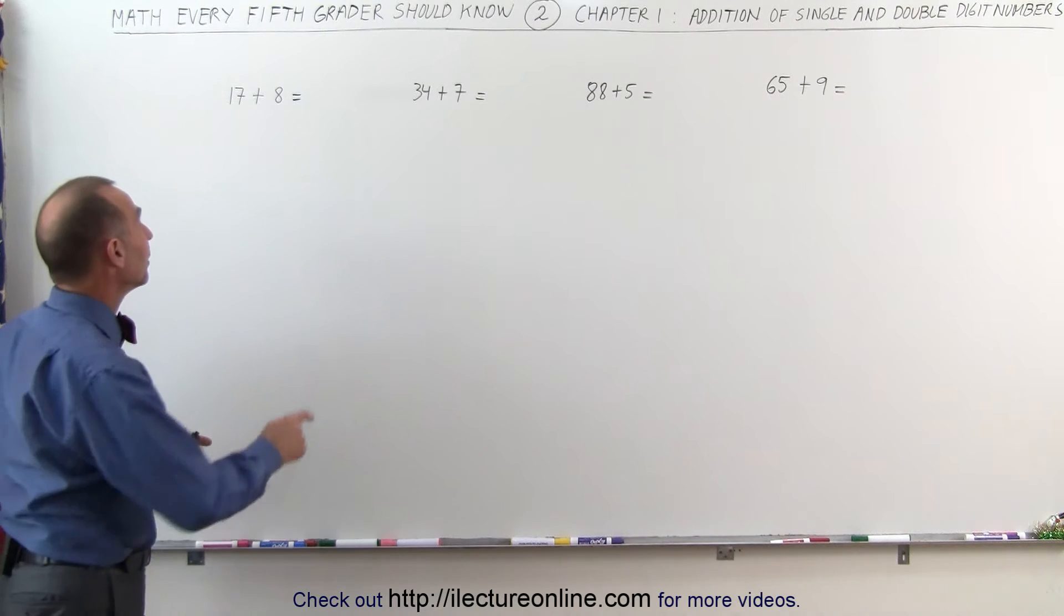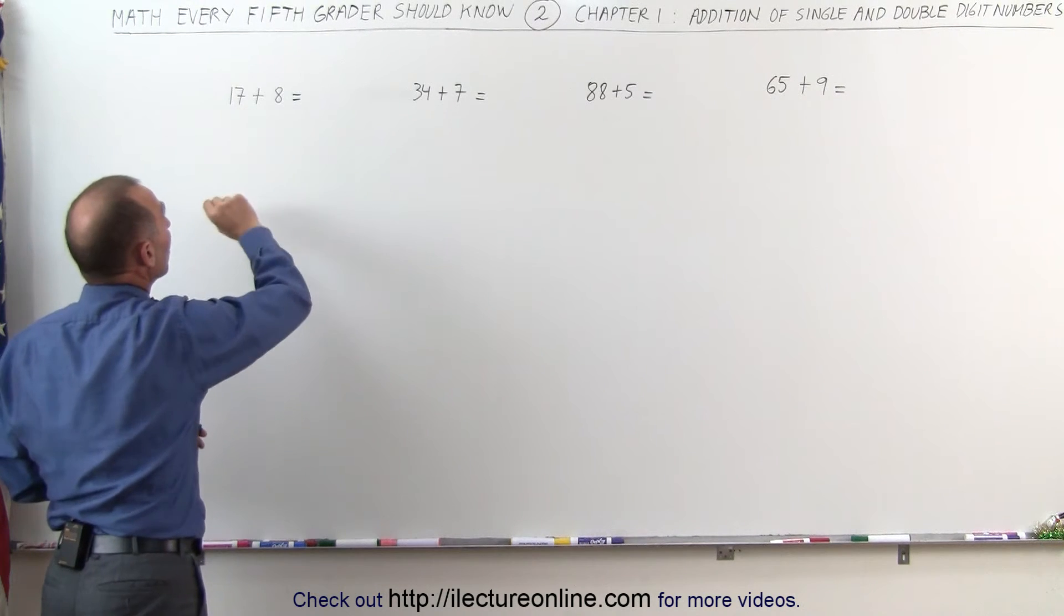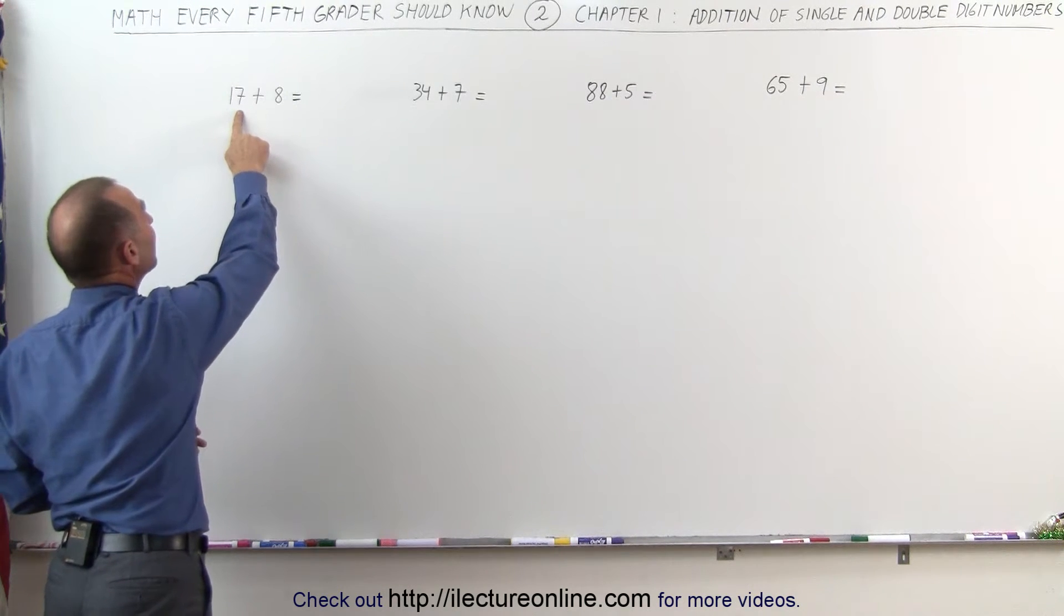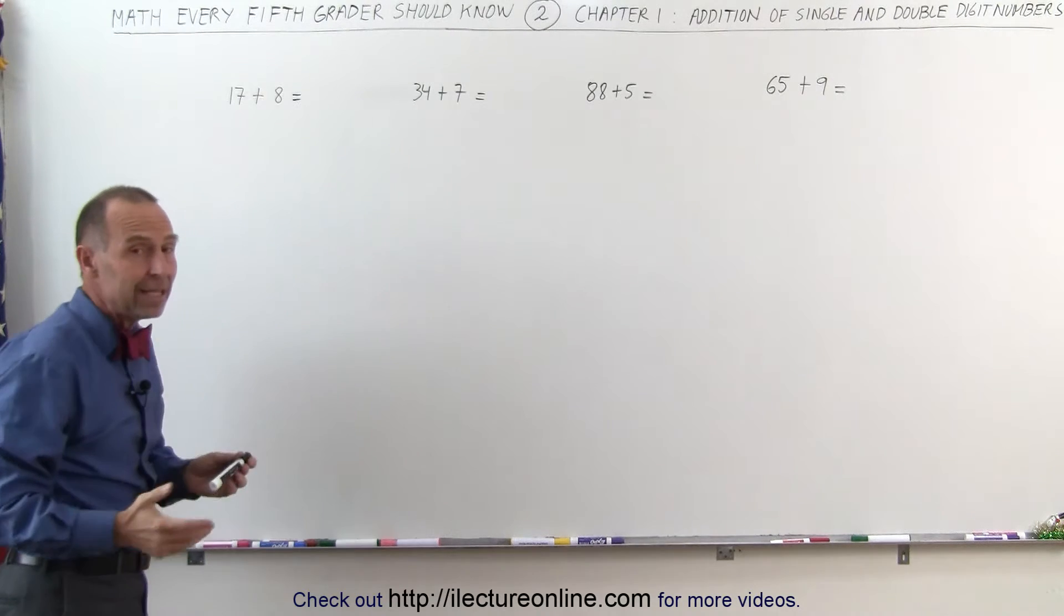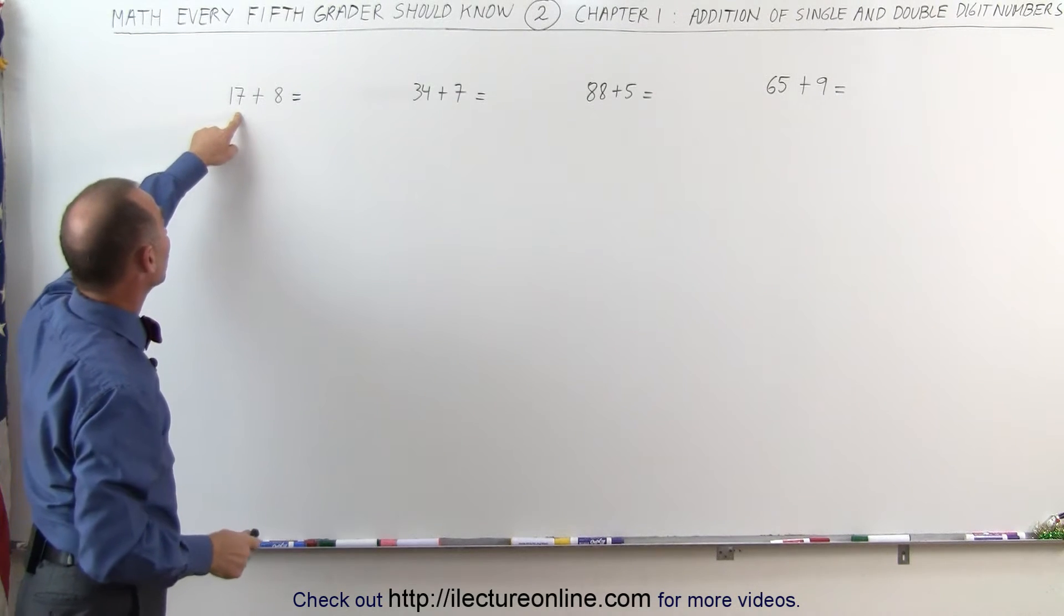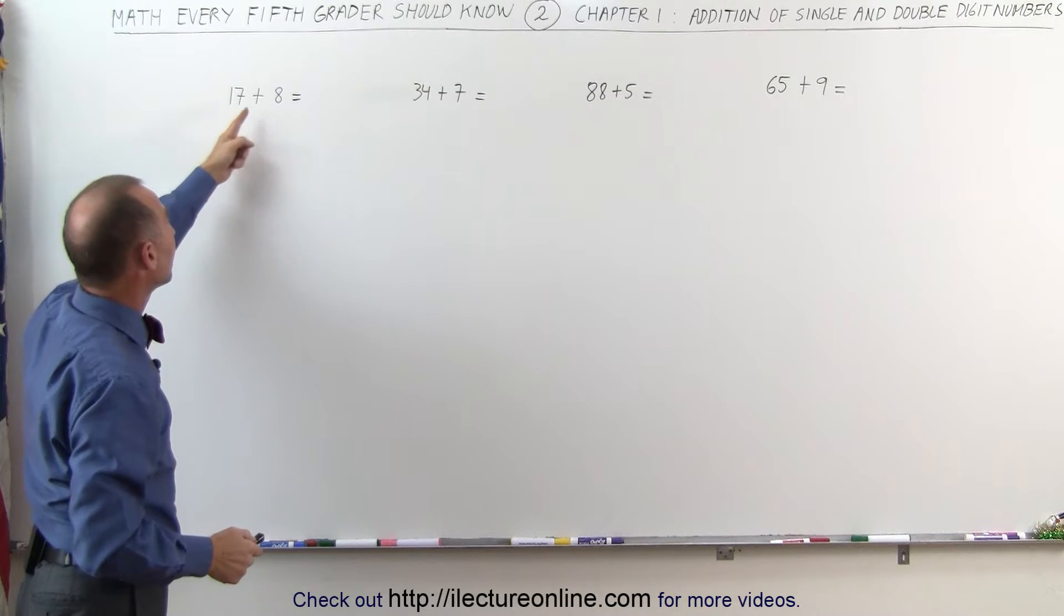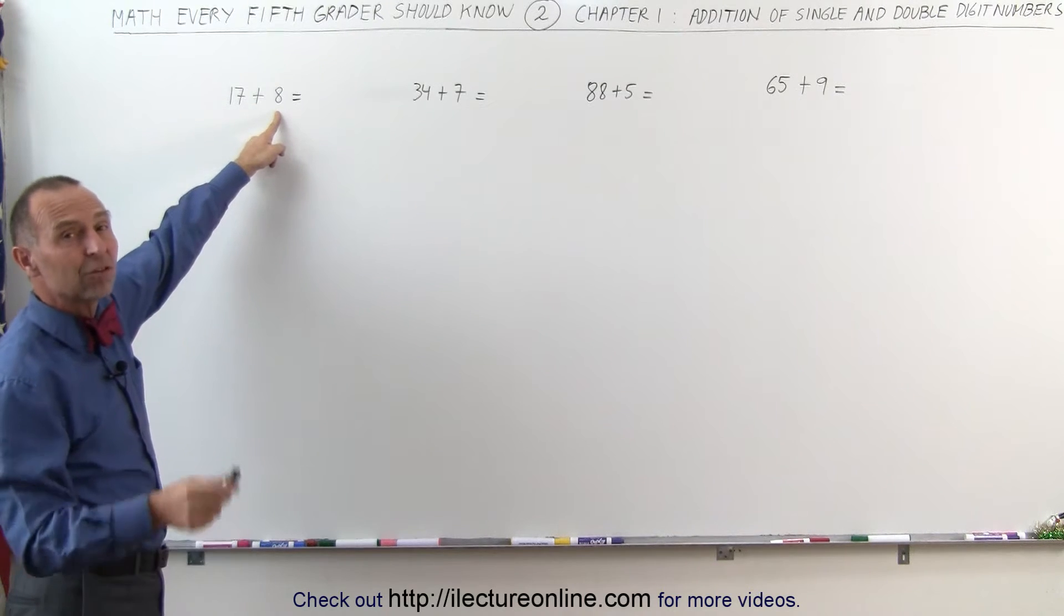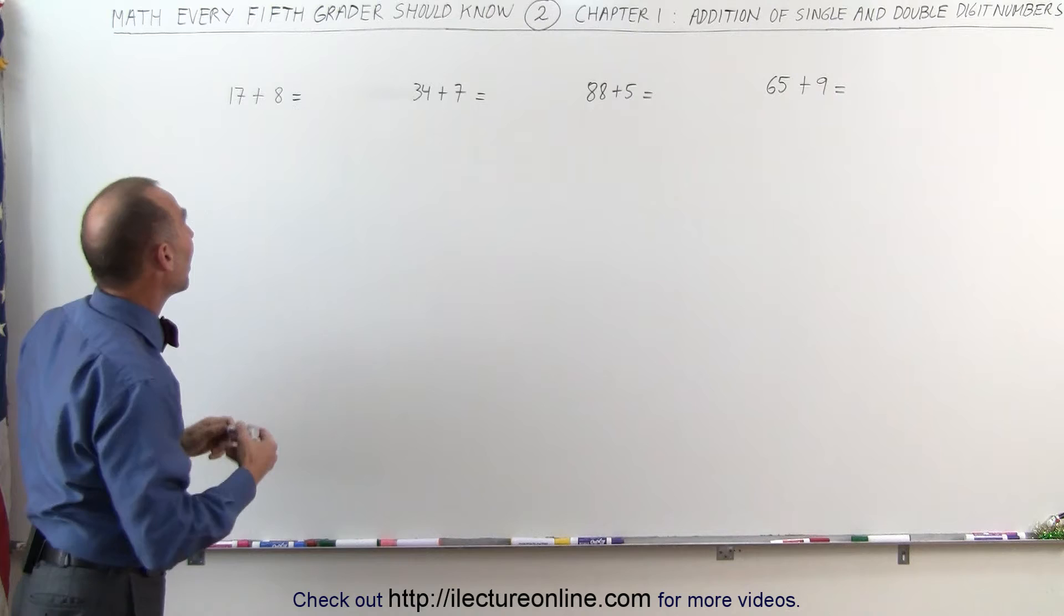The best way to do that is to look at 17, the bigger of the two numbers, and see how much more we need to make 20 out of 17. If we add 3 more to the 17, we get 20. If we subtract the 3 from 8, that leaves us with 5. 20 plus 5 gives us 25.